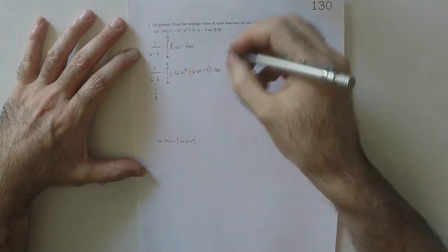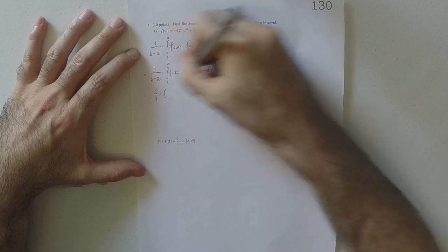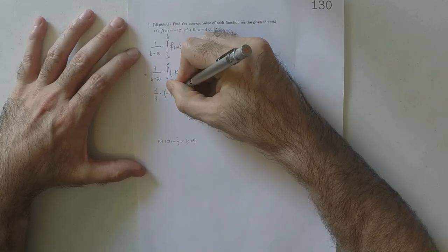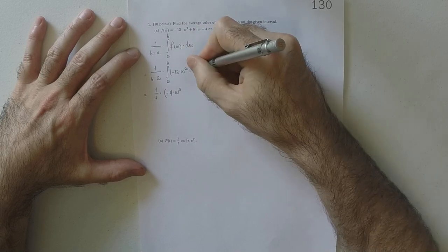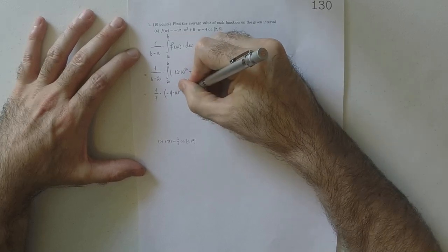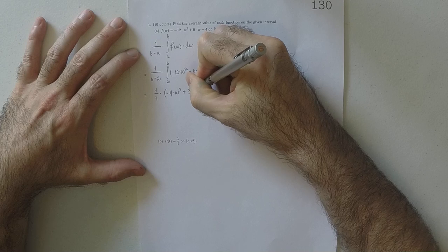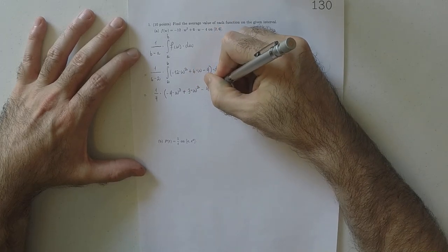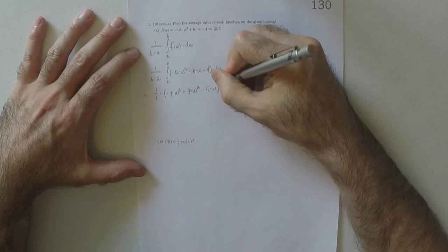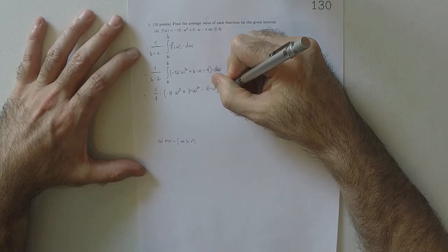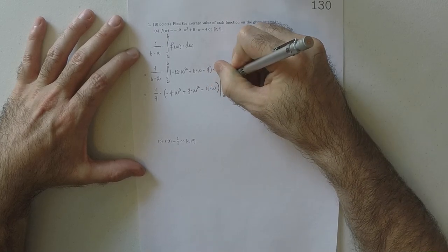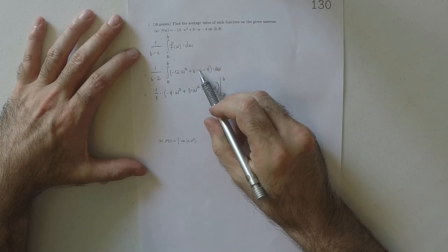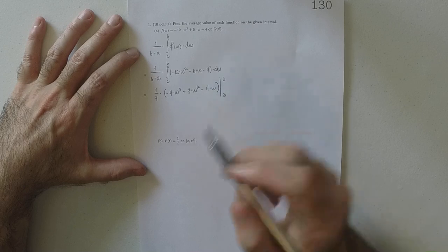And then using the fundamental theorem of calculus, the antiderivative of that would be negative 4w cubed plus 3w squared minus 4w. And then we need to evaluate this from 2 to 6. So just a quick check. If we differentiate that, we get that. If we differentiate that, we get that. If we differentiate that, we get that. Okay, looks good.